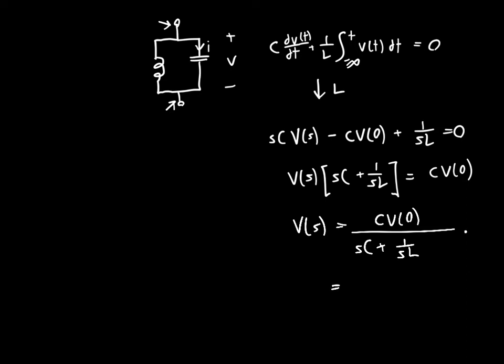So we're just going to multiply the top and the bottom by s over s and by 1 over C divided by 1 over C, just to make it look prettier. We'll get s times v(0) up top divided by s squared plus 1 over LC.